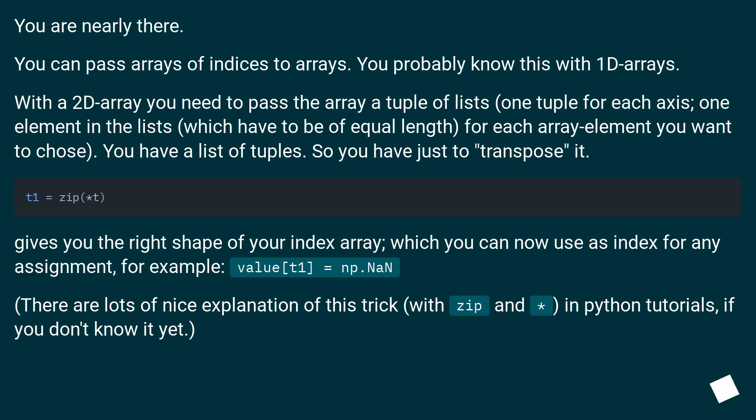This gives you the right shape of your index array which you can now use as index for any assignment. For example, value[t1] = np.nan. There are lots of nice explanation of this trick with zip and * in python tutorials if you don't know it yet.